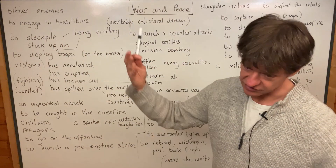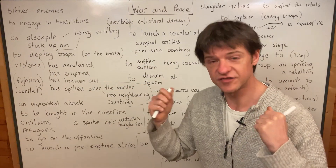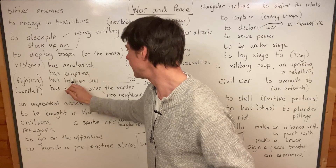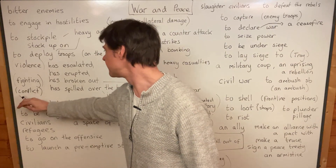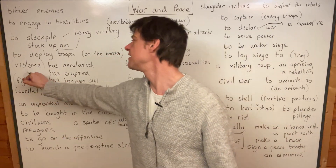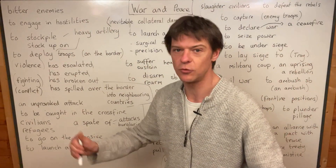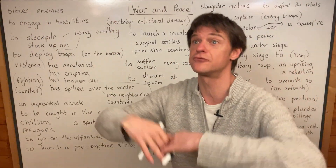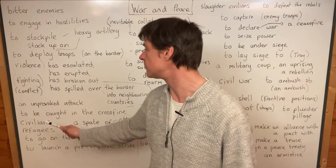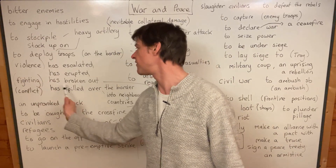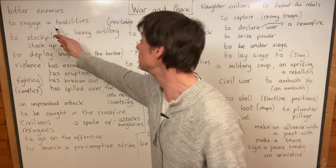If you engage in hostilities, you start fighting — simple as that. When two countries engage in hostilities, some kind of conflict erupts. Remember, we use the word 'erupt' for volcanoes, and we also use it for conflict: conflict has erupted, fighting has erupted, violence has erupted. I also want you to memorise 'break out,' which is like an eruption — fire can break out, a pandemic can break out, disease can break out, fighting can break out, conflict can break out, and violence can break out.